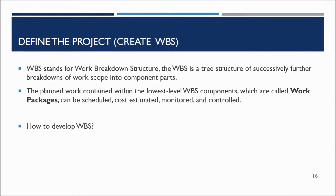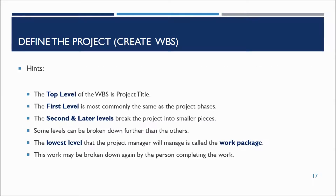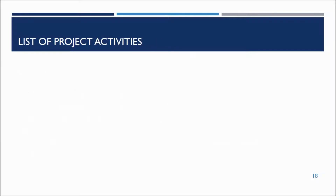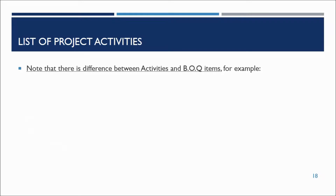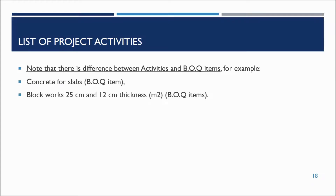To develop a work breakdown structure, you can search for templates or decompose the project into smaller, manageable parts. The top level of the WBS is the project title; the first level commonly corresponds to project phases; subsequent levels break the project into smaller pieces. The lowest level the project manager will manage is the work package, which may be broken down further by the person completing the work. Note that there is a difference between activities and BOQ items. For example, concrete for slabs can be divided into activities such as shuttering, steel reinforcement, and pouring, or divided per floor. However, blockwork of 25 cm and 12 cm thickness can be consolidated into one activity. BOQ can assist in developing the activity list.